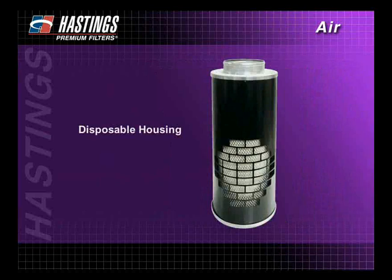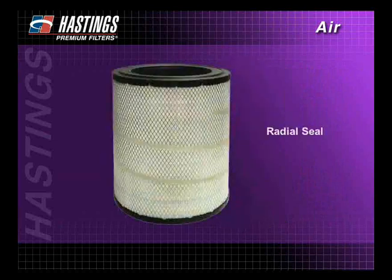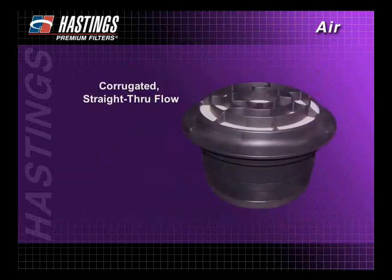Disposable housing filters are designed with both the filter and housing in one unit and are easy to replace. Radial seal filters are designed with molded ends to make servicing easier and more cost effective. And corrugated straight through flow filters are designed to have high flow and high capacity in a more compact filter.